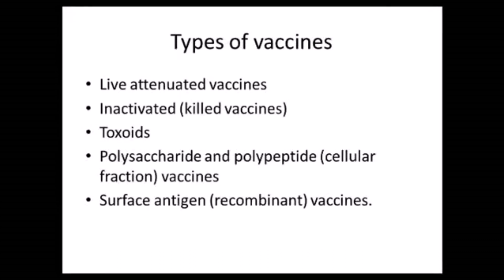The third variety is toxoids, where we inactivate the toxin produced by the bacterium or virus. An important point to remember is that toxoids are effective only against the toxin produced by the bacterium or virus, and not against the organism itself. The fourth variety is polysaccharide and polypeptide or cellular fraction vaccines, which use a part of the organism such as the capsule or cell wall. The last variety is surface antigen or recombinant vaccines, wherein we take just the antigen from the organism — not the whole organism or a part of it — and make it into a recombinant form to produce a vaccine.